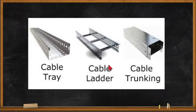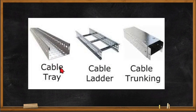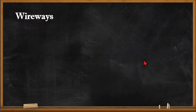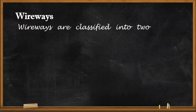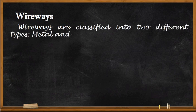A cable tray can be a single unit or an assembly of units or sections with associated fittings, used to securely fasten or support cables and other raceways. There are three common types of cable trays: the standard cable tray, the cable ladder, and cable trunking.